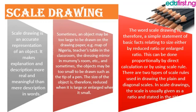Scale drawing is an accurate representation of an object. It makes explanation and description more real and meaningful than description in words — pictures most times give a clearer explanation of an event than words. Sometimes an object may be too large to be drawn on the drawing paper; for example, the map of Nigeria is very big, but you can minimize and reduce it.